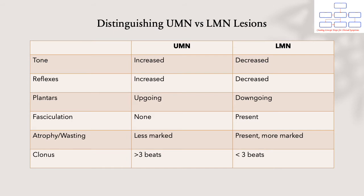In this slide you can see a table of signs that will help you distinguish if your patient's weakness is predominantly caused by an upper motor neuron lesion — any lesion arising in the brain, brainstem, or spinal cord — or a lower motor neuron lesion, which is any lesion arising from structures that exit the spinal cord, beginning from your anterior horn cells down to your basic muscle unit.